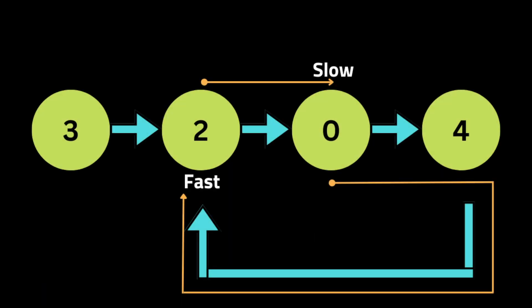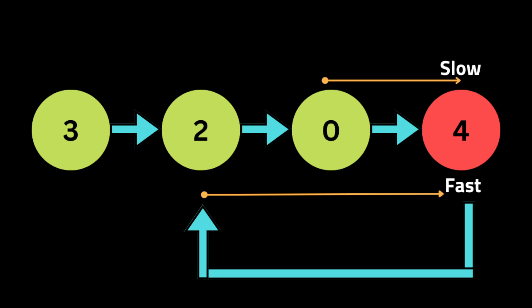We move the slow one step and the fast pointer two steps, so the fast pointer will be at the node with value 2. We check if slow and fast point to the same node — they don't. We then move slow to the node with value -4 and move fast two more steps. At this point, slow and fast meet each other, which means there is a cycle inside the linked list, and we return true.